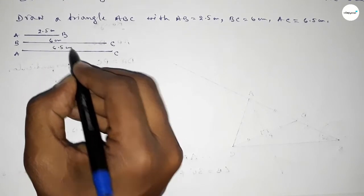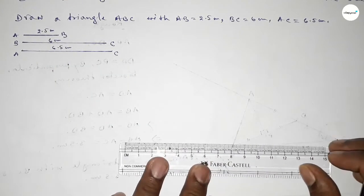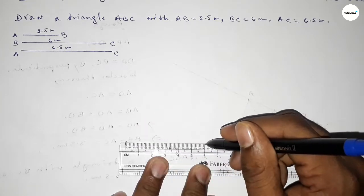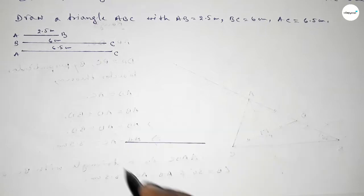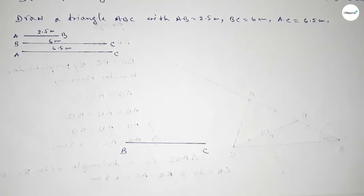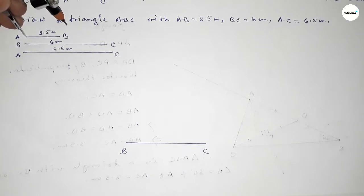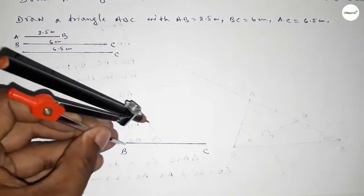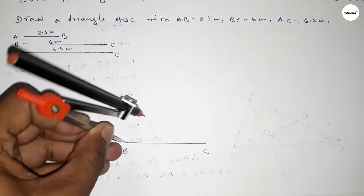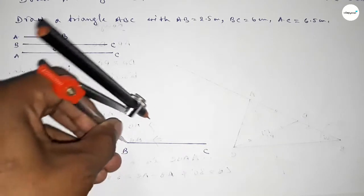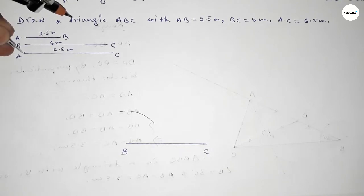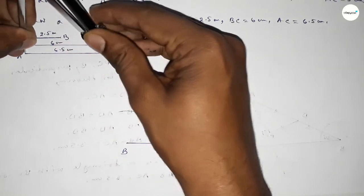Now first drawing a line of length 6 centimeter, taking here point B and here point C. Now taking the length AB using compass and putting the compass on point B and drawing an arc.